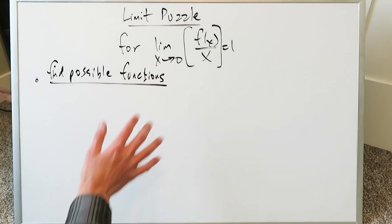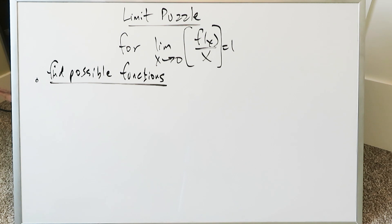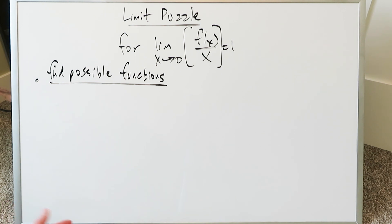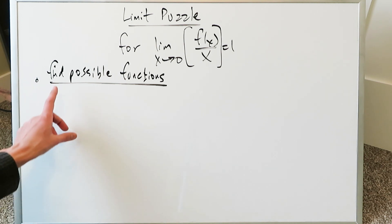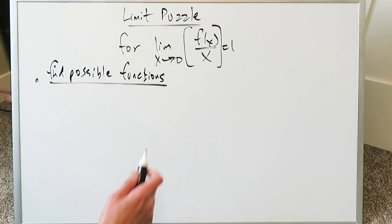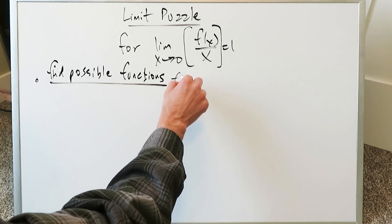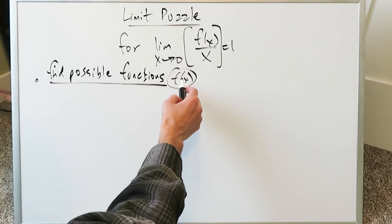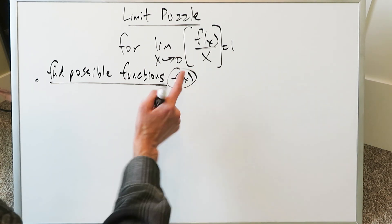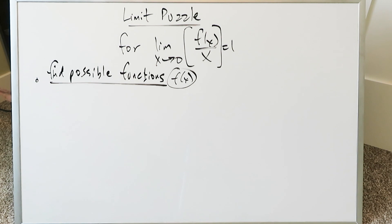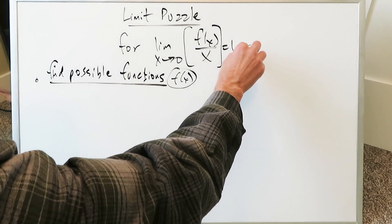The limit as x approaches 0 of f(x) divided by x equals 1. We have some function f(x) divided by x in this rational functional form, and the output should always equal 1. We have to find the possible functions which would satisfy that limit output of 1 — find possible values of f(x) that generate that output.